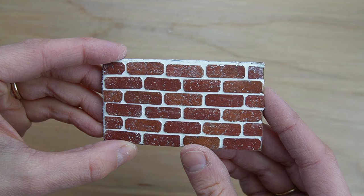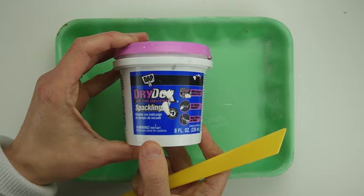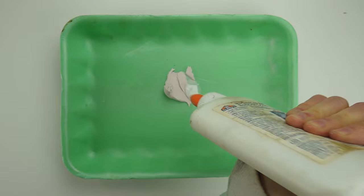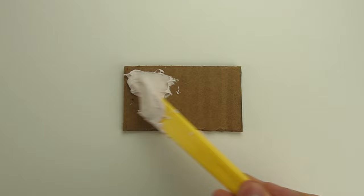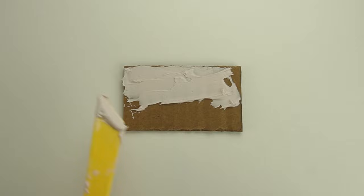I'll call this next technique for applying the bricks the mortar method. I'm mixing a small amount of my spackle with some white glue to make it thinner and also stronger. Since I'm working on a small piece, I'm covering the entire thing with the mixture, but if you're working on a larger project, you'll want to add it a small amount at a time so it doesn't dry out.